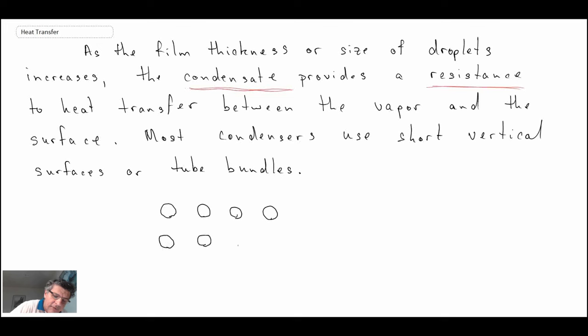This would be where you have what they refer to as shell side condensation, so the condensation is occurring on the outside of the tubes. By having these tube bundles like this, you'll get droplets forming and then the liquid will drip down and go onto the next surface. You're minimizing the overall length that you have in the vertical extent by having a lot of tube bundles like that.